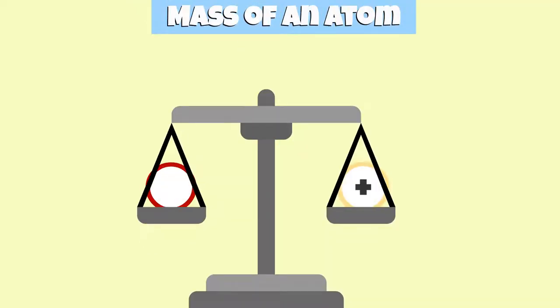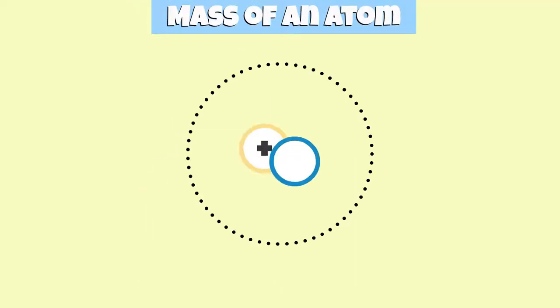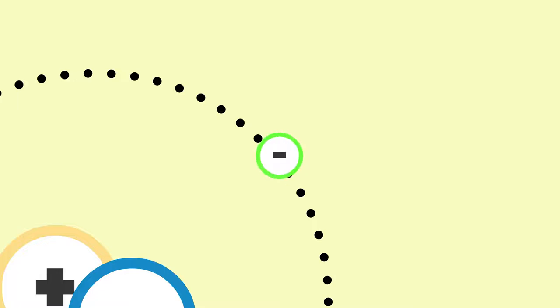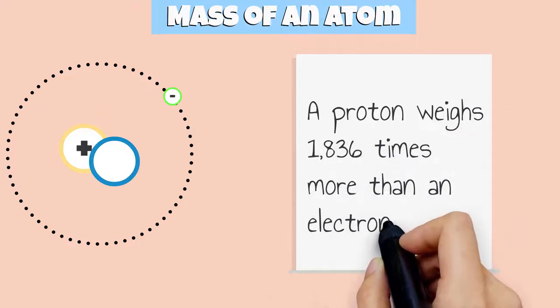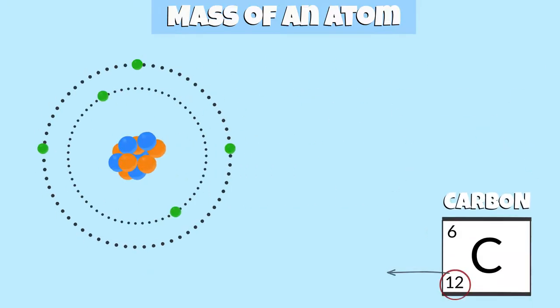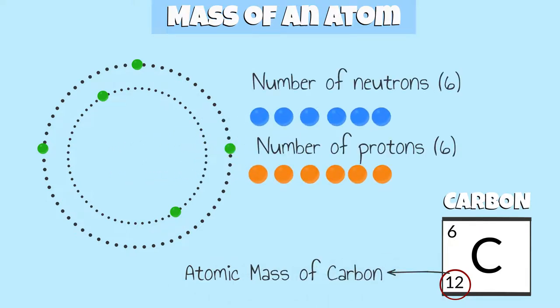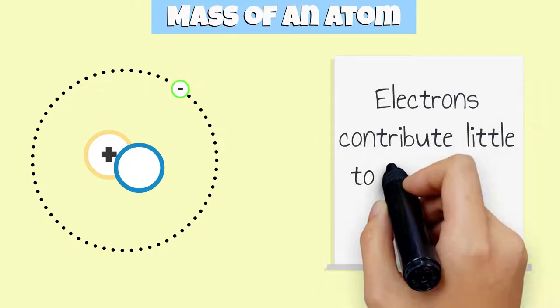Protons and neutrons have approximately the same mass, while the mass of electrons is insignificant compared to a proton or neutron. A proton weighs 1,836 times more than an electron. That is why the atomic mass of an element in a periodic table is equal to the number of protons and neutrons in an atom. Electrons contribute little to the weight of an atom.